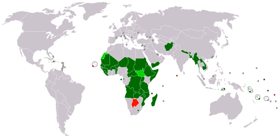Further countries graduated to advanced economy status include: Malta since 2008; Czech Republic since 2009 (since 2006 by World Bank); Slovakia since 2009; Estonia since 2011; Latvia since 2014; and Lithuania since 2015. Three economies — San Marino since 2012, Macau since 2016, and Puerto Rico since 2016 — lack data before being listed as advanced economies, making it difficult to judge their prior status.